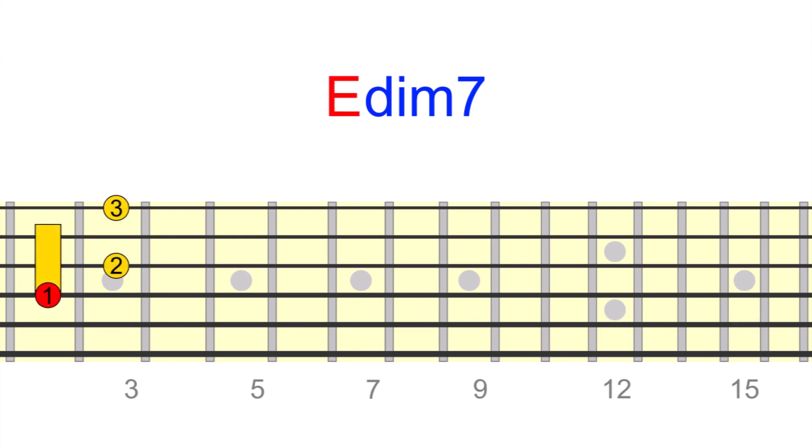Another example of this, starting on E diminished 7, using a shape with the root on the 4th string. Another example starting on G diminished 7, using a 6th string root shape.